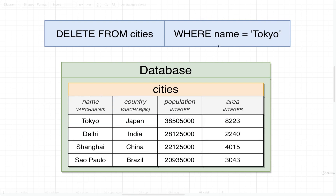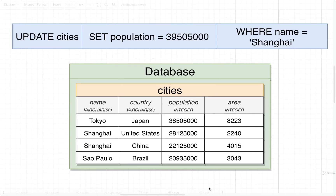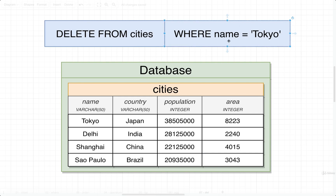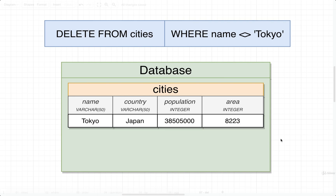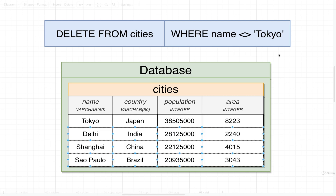This WHERE clause works very similarly to how UPDATE works. If you match multiple different rows with your WHERE statement, you're going to delete multiple different records. For example, DELETE FROM cities WHERE name is not equal to Tokyo — think about what that would do. It's going to find Delhi, Shanghai, and São Paulo, select those three rows, and they're all going to get deleted in one go.